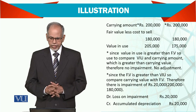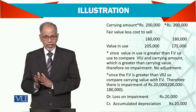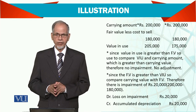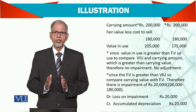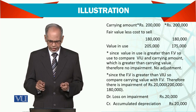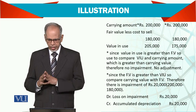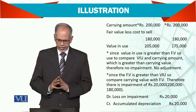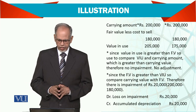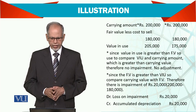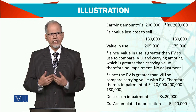For asset B, carrying amount is 200,000, fair value less cost to sell is 180,000, and value in use is 175,000. We compare: fair value of 180,000 is greater than value in use of 175,000, so we select 180,000 as the recoverable amount and compare with 200,000. There is an impairment loss of 20,000. We simply debit impairment loss and credit accumulated depreciation. Essentially, impairment loss is as good as additional depreciation.